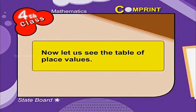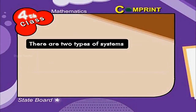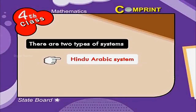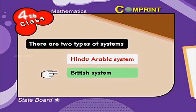Now let us see the table of place values. There are two types of systems: the Hindu-Arabic system and the British system.